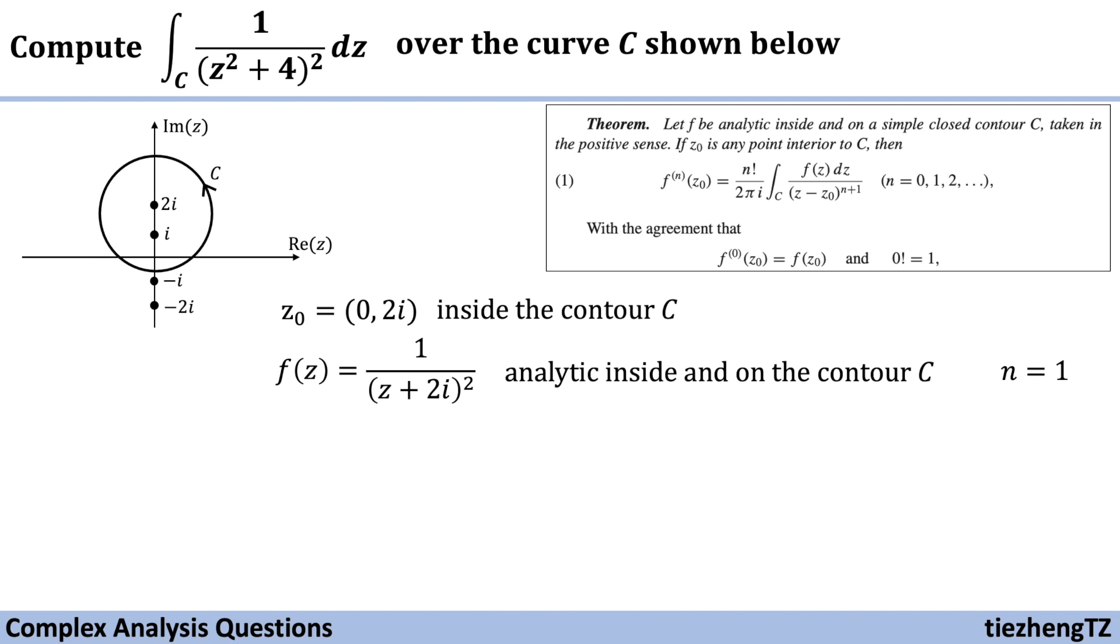So next, we just need to rewrite this function. The integral function in this theorem is integral f(z) dz over (z - z₀) to the power of n plus 1. By substituting, we have f(z) equals 1 over (z + 2i) squared. We also have z₀ is 2i. And from the theorem, we know this function equals 2πi times the first derivative of f(z₀) over 1 factorial.